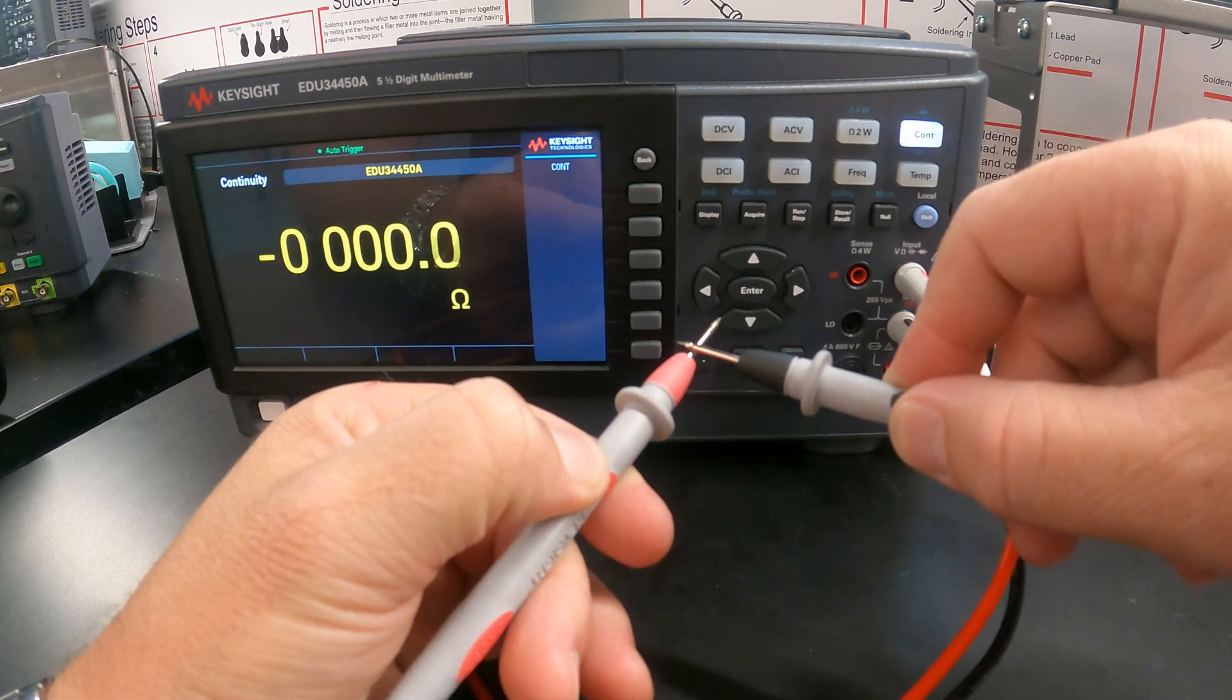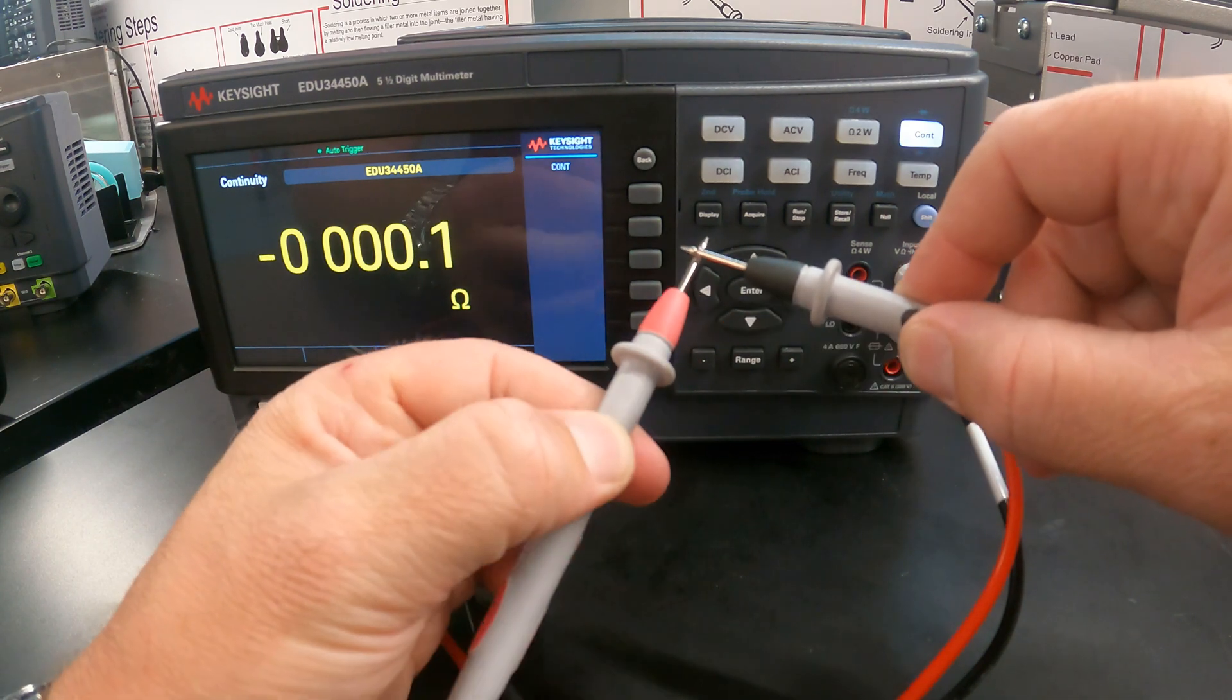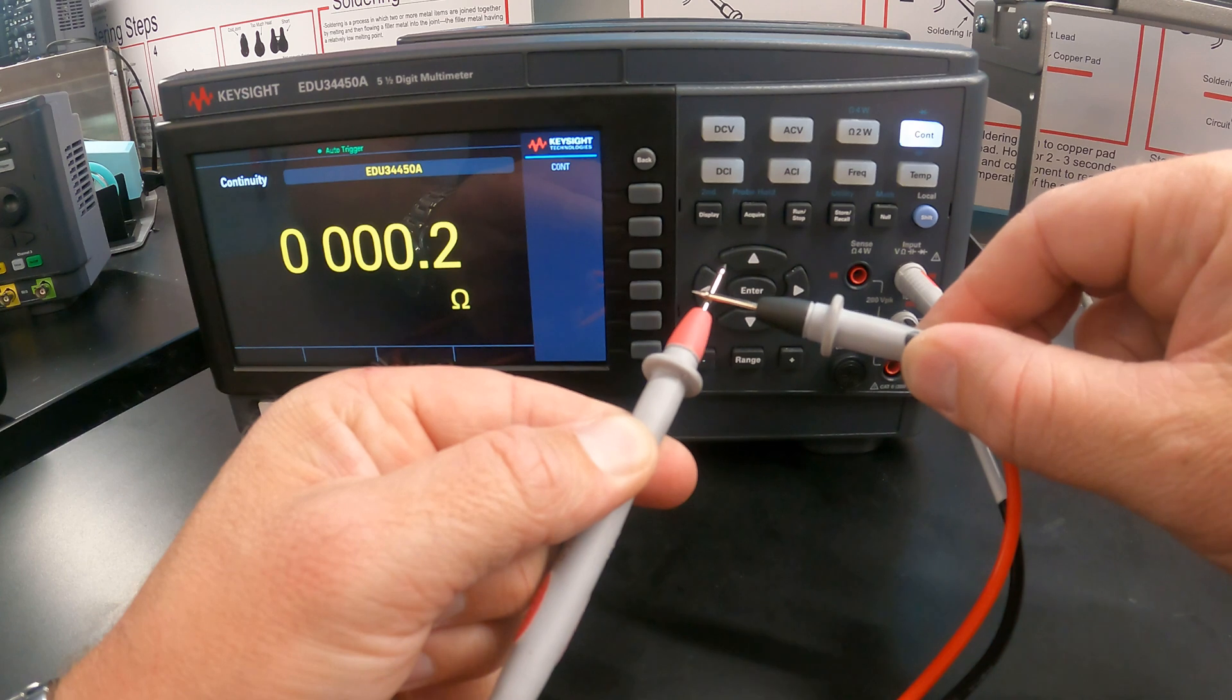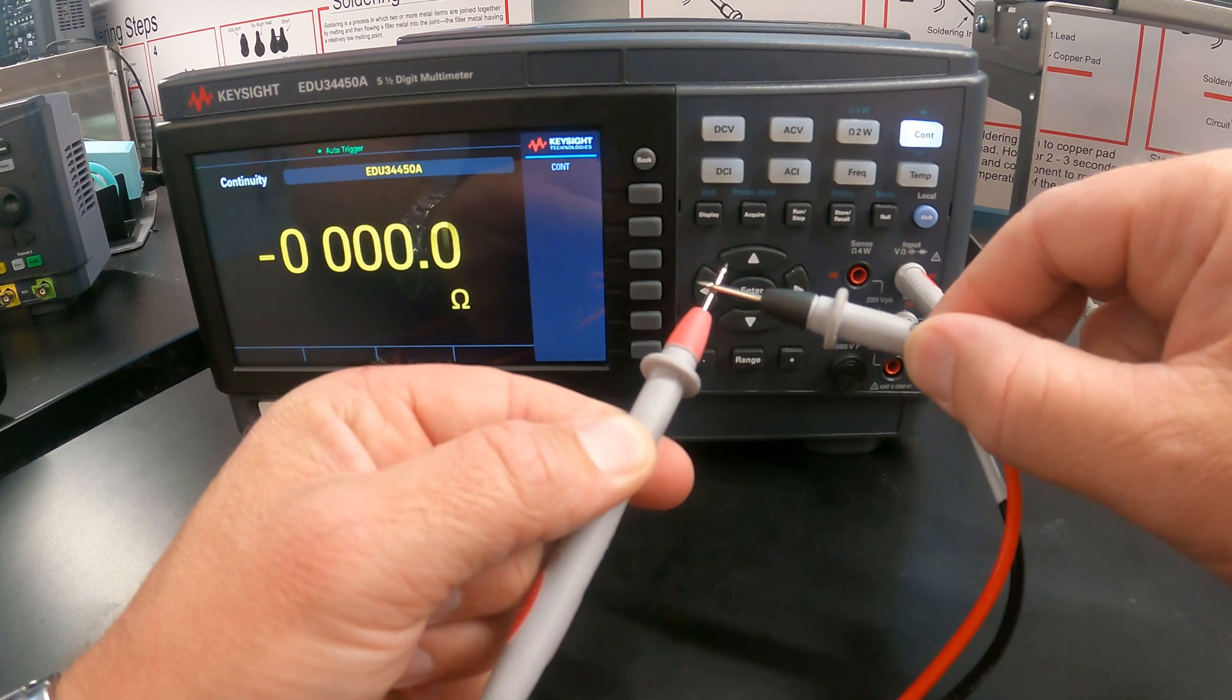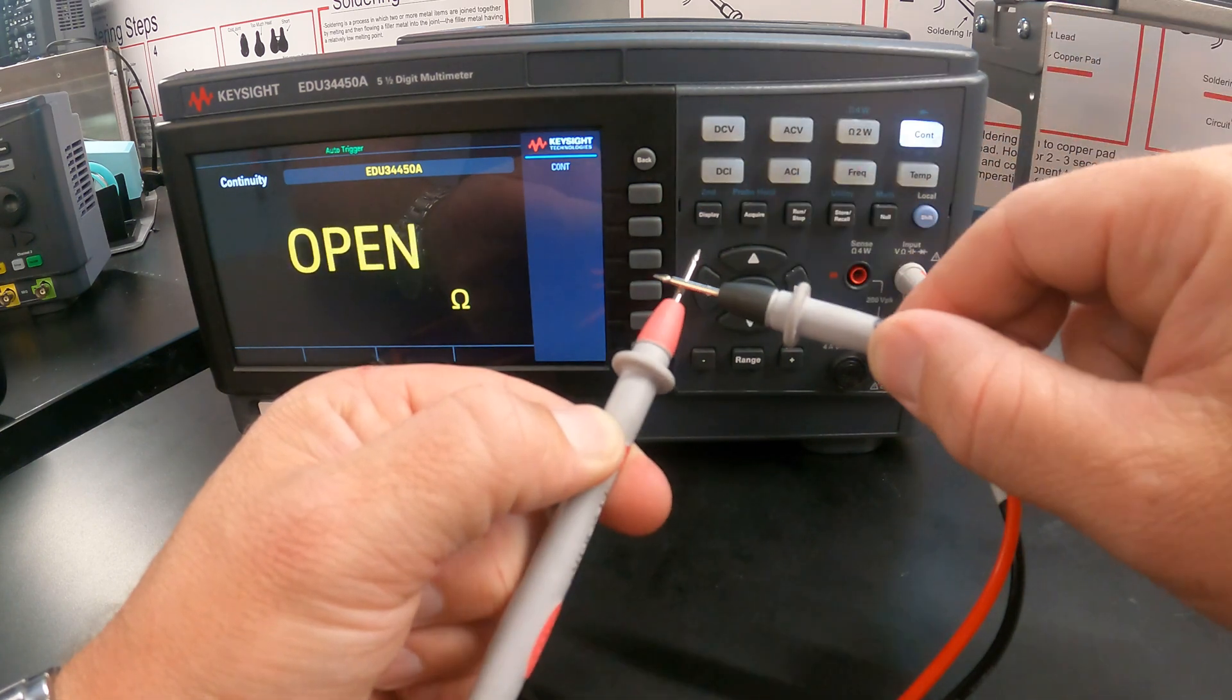And as you can see on the screen, it is showing us resistance. So, what we're seeing right now is that these leads have under one ohm of resistance. Continuity is essentially a resistance measurement, and that beep is triggered by a threshold.